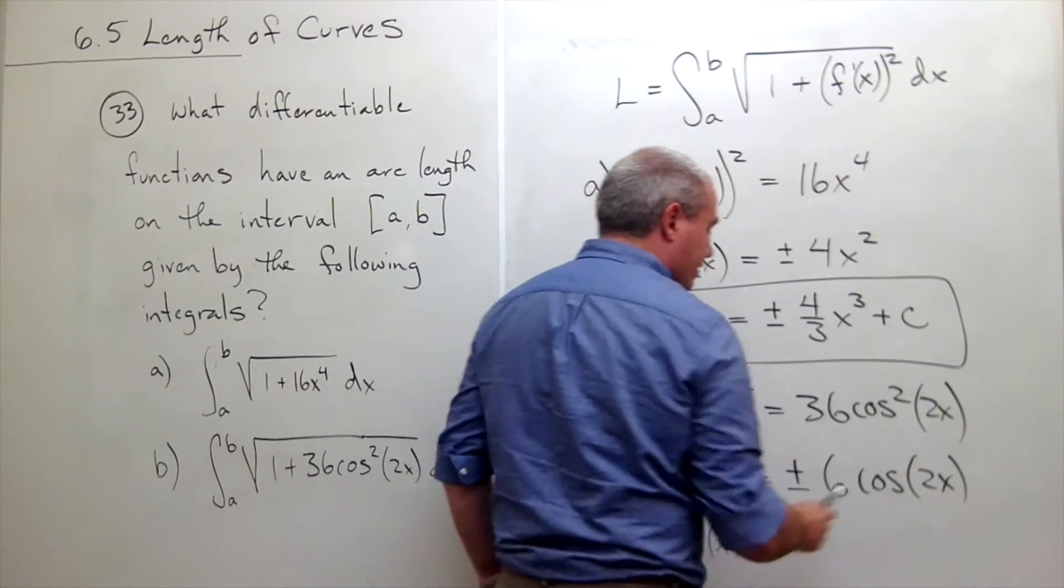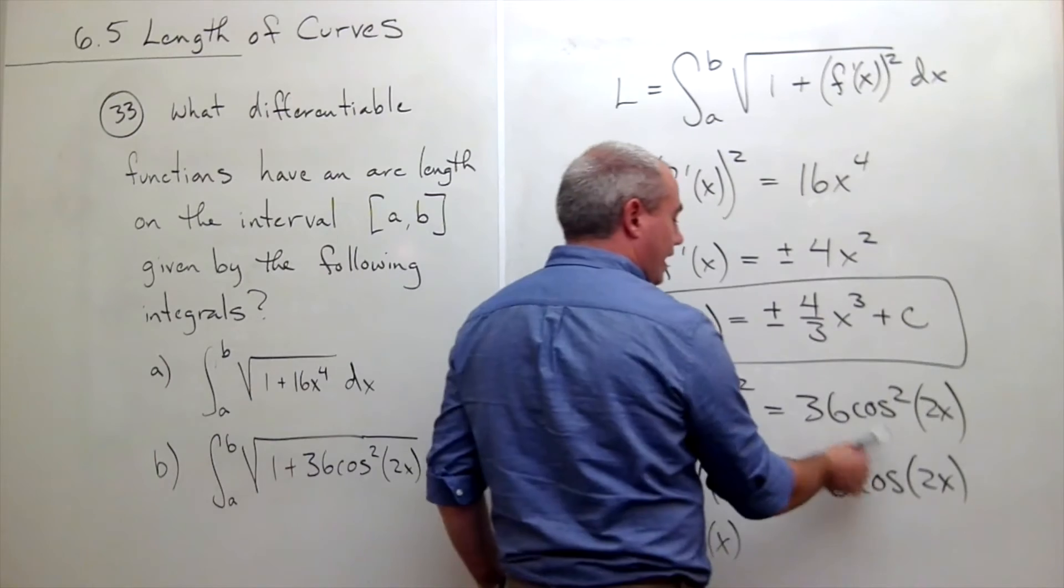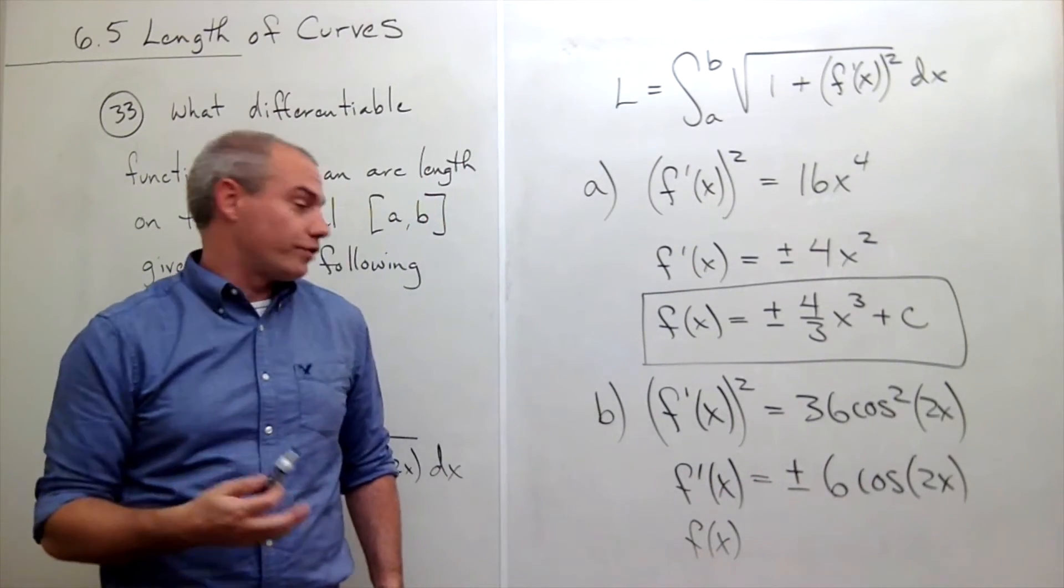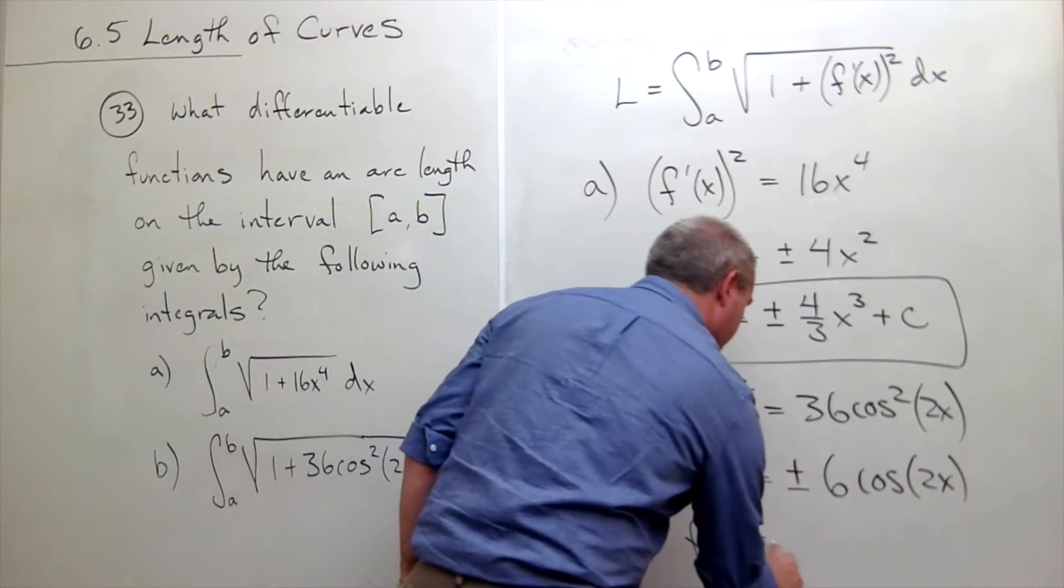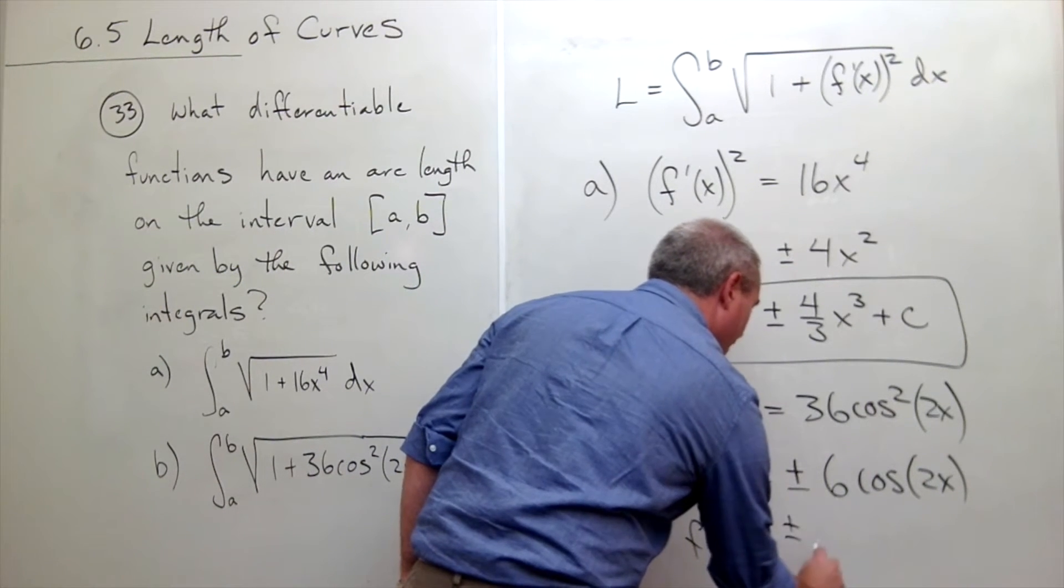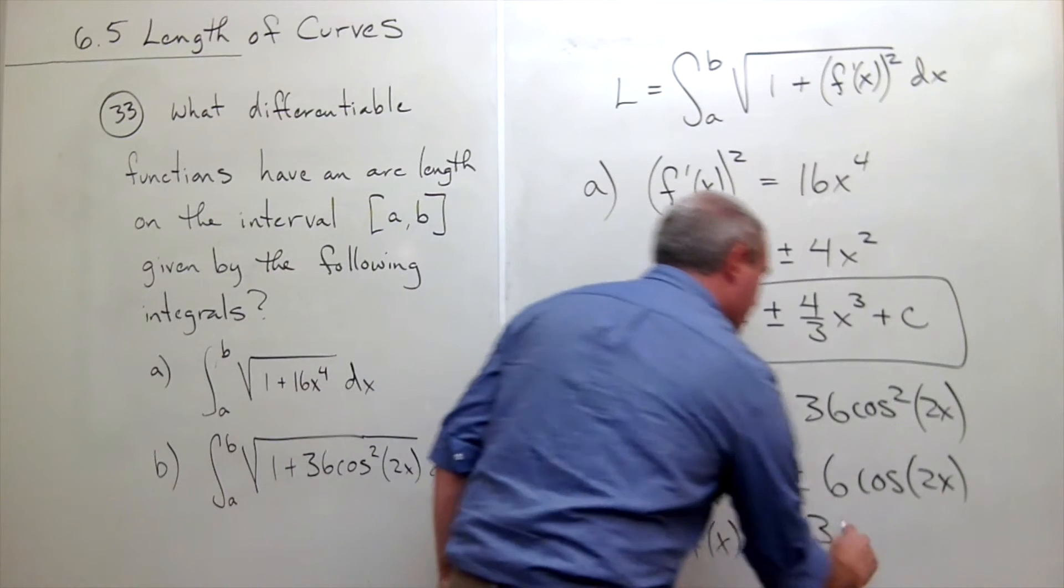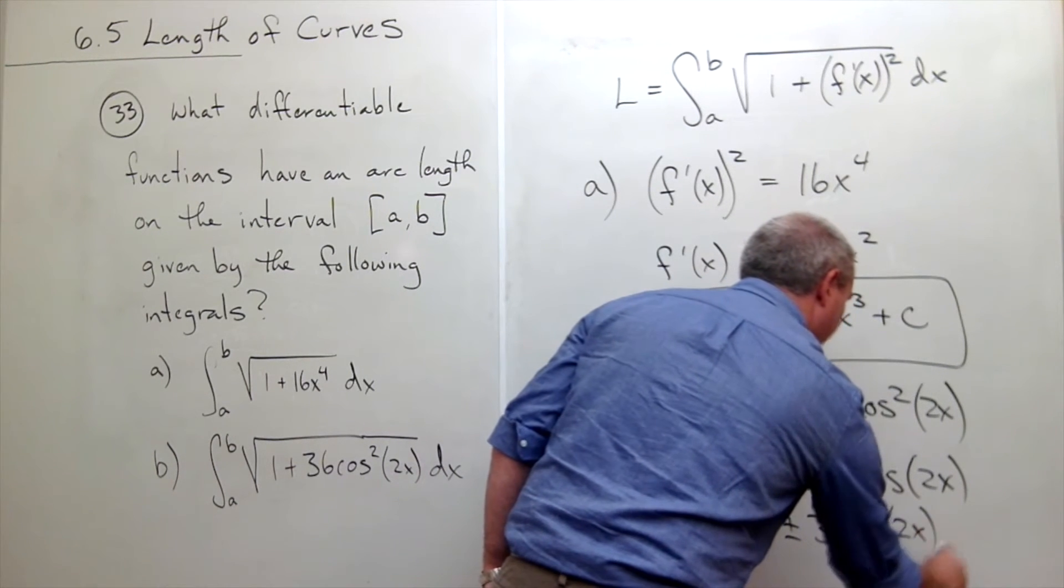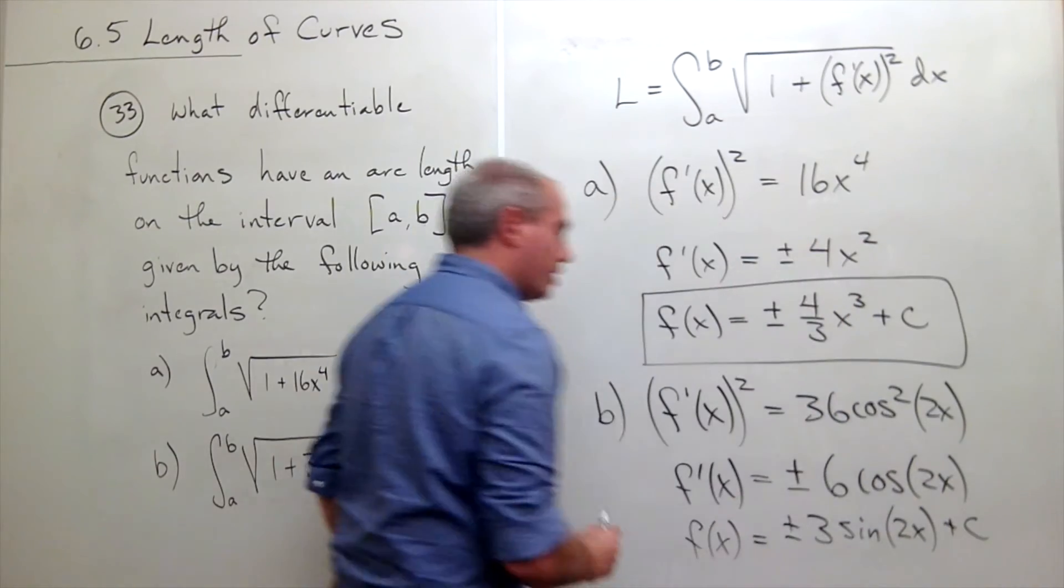Sine's derivative is cosine, but when I take an anti-derivative, I need to divide by 2 to account for the chain rule of derivatives.